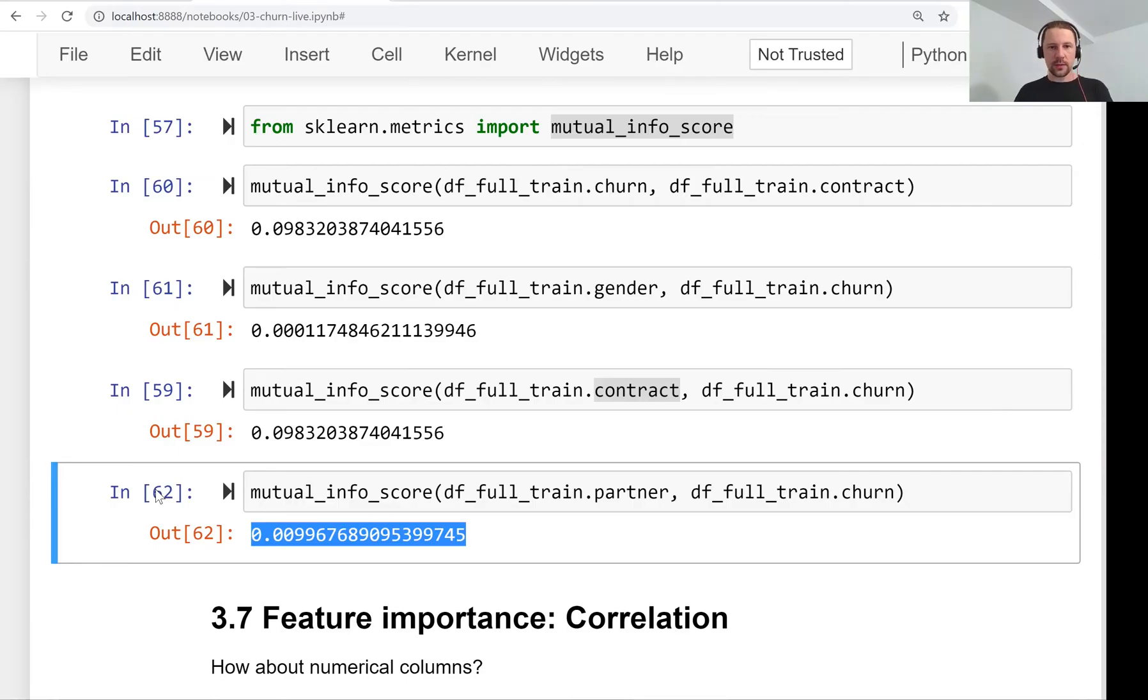What we can do is apply this metric to all the variables, all the categorical variables we have, and see which of them has the highest mutual information and which has the lowest.